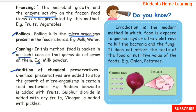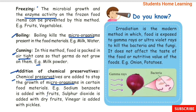Addition of chemical preservatives: Chemical preservatives are added to stop the growth of microorganisms in certain food materials. Example: sodium benzoate is added to fruits, sulfur dioxide is added to dry fruits, and vinegar is added to pickles.